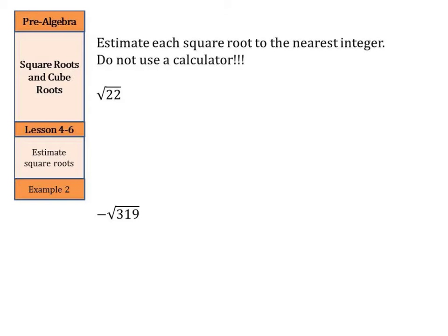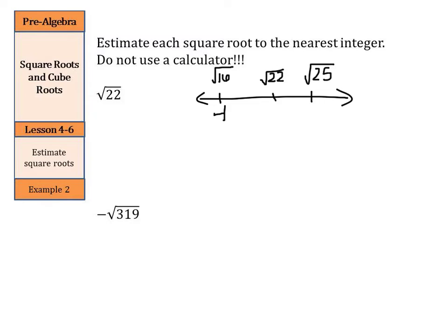We can estimate each square root to the nearest integer without using a calculator. We can actually use a number line to help us out with this. So we can sketch ourselves a number line and put three numbers on it. In the middle, let's put the square root of 22. Now, think about your perfect squares around the square root of 22. On the smaller side, you have the square root of 16. On the larger side, you have the square root of 25, with the square root of 16 being 4 and the square root of 25 being 5.